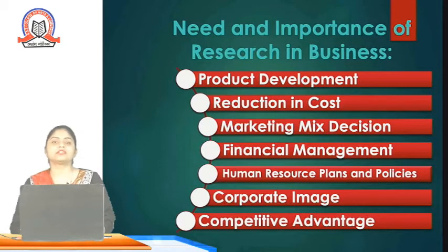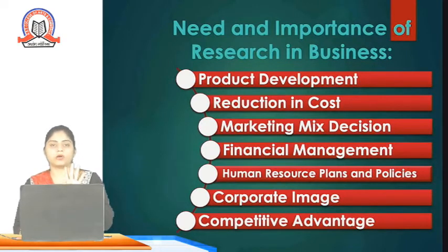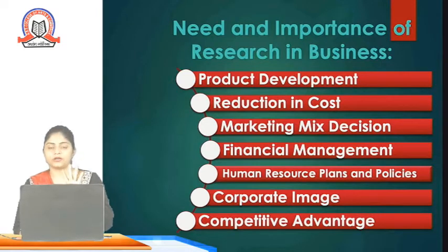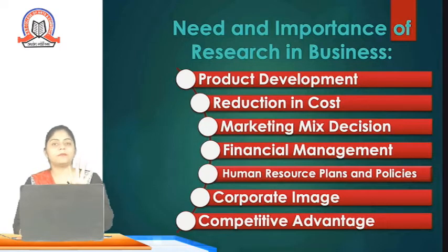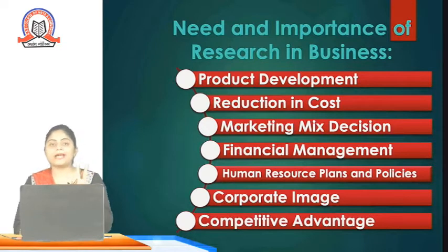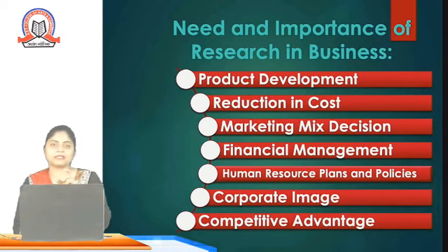There are four core departments in each organization: marketing, finance, HR, and production. Regarding the first department, marketing — the company needs to decide the marketing mix, that is the four P's: product, price, place, and promotion. The company needs to do product research, price research, place or distribution research, and promotion or communication research. That is the marketing mix decision.